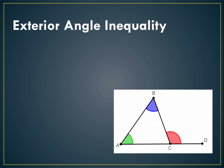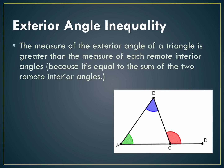Exterior angle inequality. You actually should be intuitively knowing this result. This says that the measure of the exterior angle of a triangle is greater than the measure of each of its remote interior angles. Angle BCD is the exterior angle on this triangle. An exterior angle forms a linear pair with one of the angles of the triangle. The two other angles, A and B, are the remote interior angles.